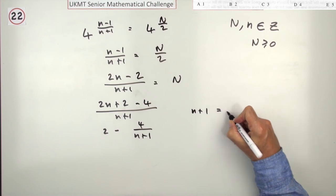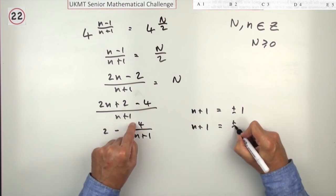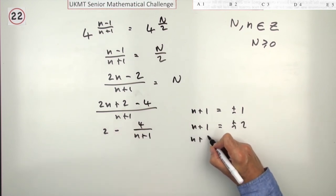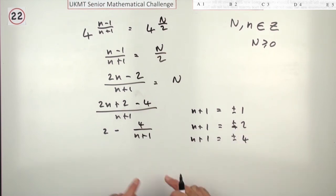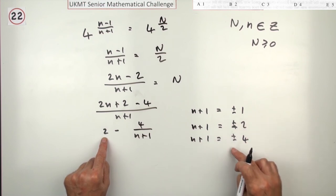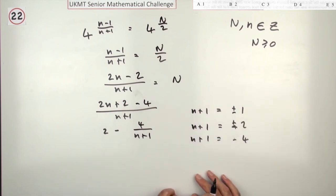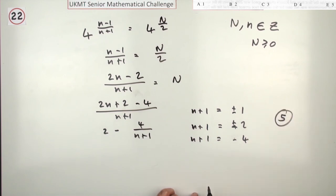Now, there's not many possibilities. Either it's equal to 1, or it's equal to plus or minus 1, plus or minus 2, or plus or minus 4. So, for these divisions, there are 5 answers. In which case, the answer is E.